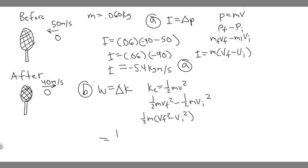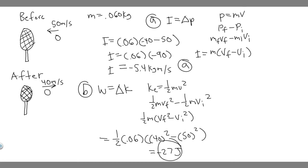Plugging in: it's ½ times 0.06 times (40² minus 50²). Keep in mind the signs don't matter here because we're squaring the velocities. So 0.5 times 0.06 times (1600 minus 2500) equals minus 27. Work is measured in joules, so the work done by the racket on the ball is −27 joules. That is the answer to Part B.